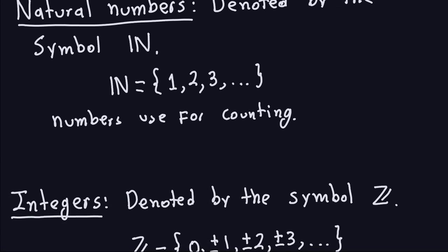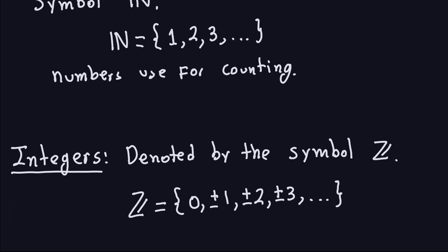We also have the integers, which is actually the basic study of elementary number theory. We're going to denote them by the letter Z with a bar. The integers are the collection of 0, positive and negative 1, positive and negative 2, and so on. So basically, the integers are the natural numbers with 0 and all the negatives. It's an infinite collection of numbers. Whenever you see me writing this N or this Z symbol, by N I mean the natural numbers, and by Z I mean the integers.